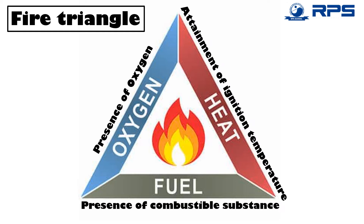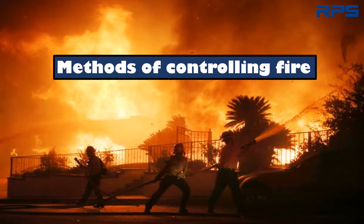Combustion cannot occur in the absence of any of these factors. In order to control or fight fire, either one or more of the following would be helpful: removing the combustible substance, cutting off the supply of air, or cooling down the combustible substance below its ignition temperature. Let's discuss some common methods of controlling fire.